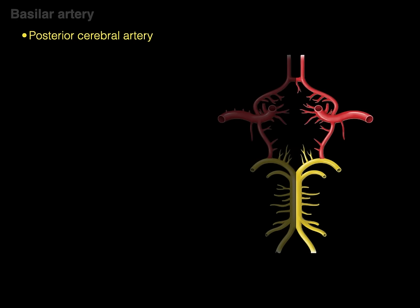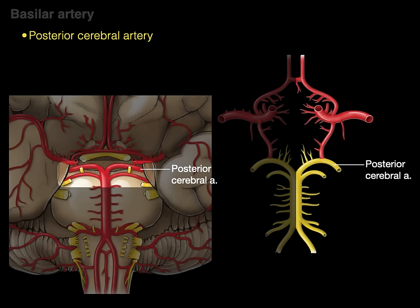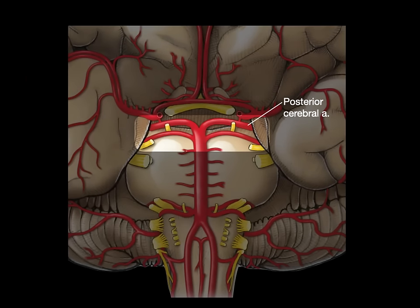At the very end of the basilar artery is the posterior cerebral artery, which supplies the back of the cerebrum. Notably, cranial nerve 3 exits between the posterior cerebral artery and the superior cerebellar artery — so if there's ever a berry aneurysm on either of those arteries, it can compress cranial nerve 3 and cause eye deficits.